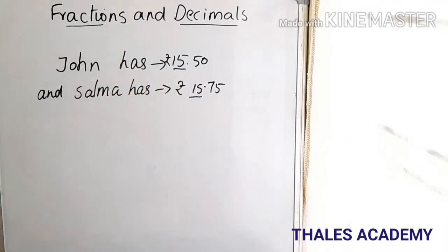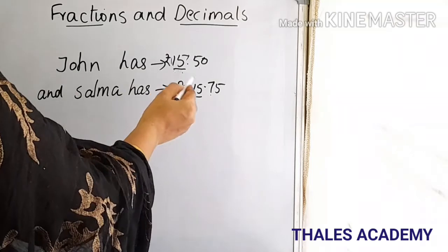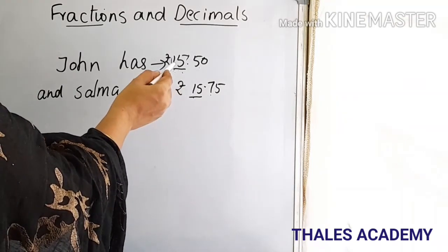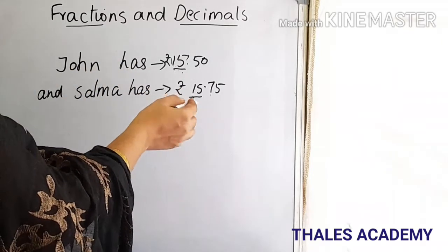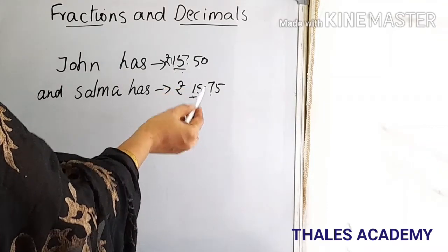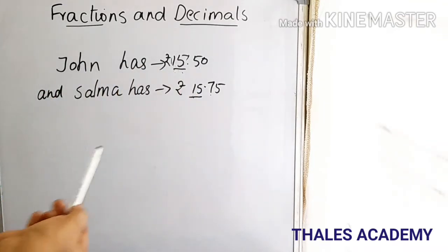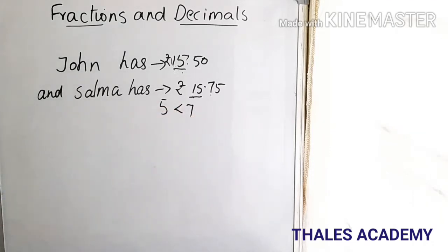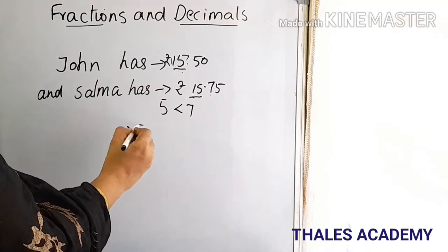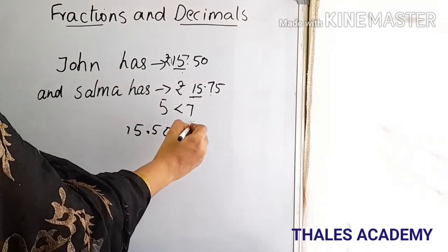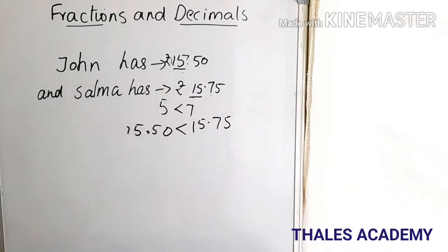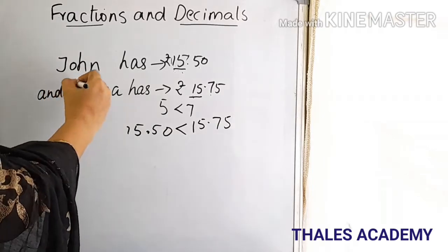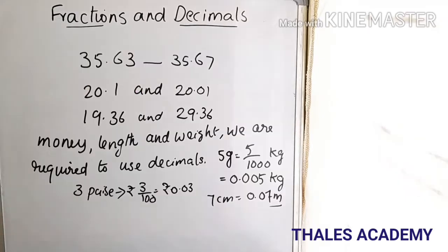Since the digits on the left of the decimal point are the same, we compare the digits on the right of the decimal point starting from the tenths place. We find 5 and 7 — both numbers have the same digits on the left (1 and 5), but on the right, 5 is less than 7. So 15.50 is less than 15.75. Thus Salma has more money than John.